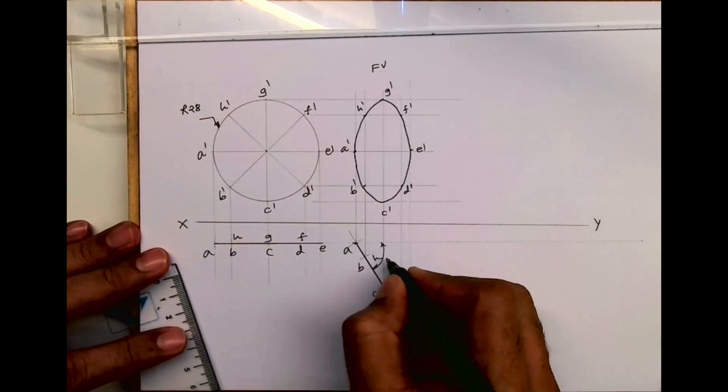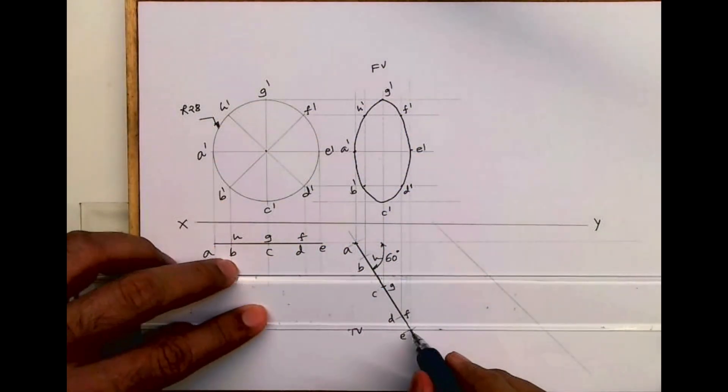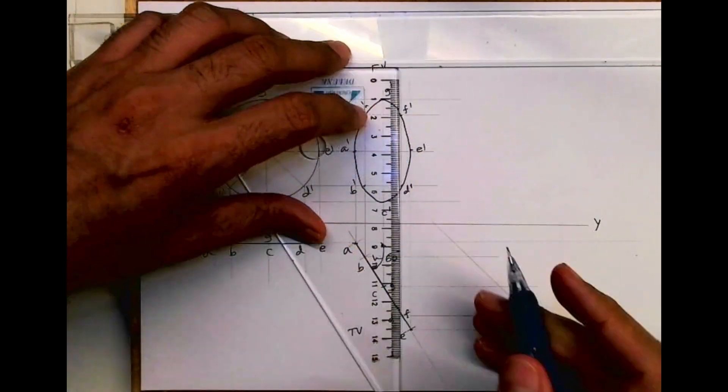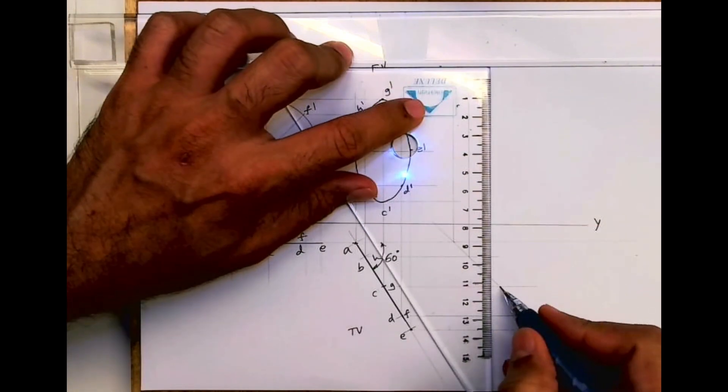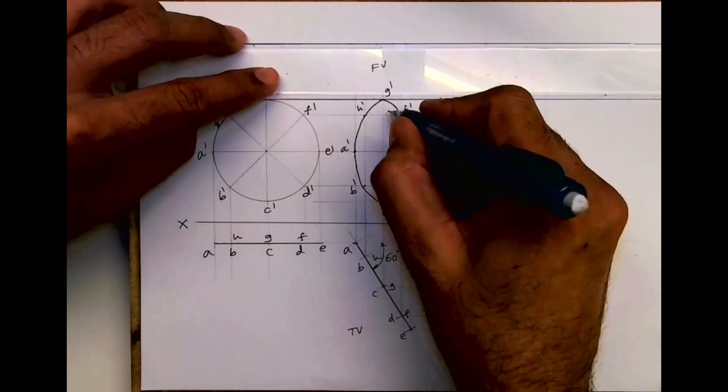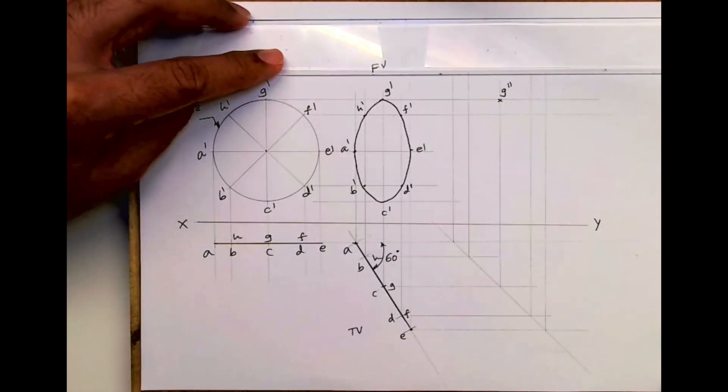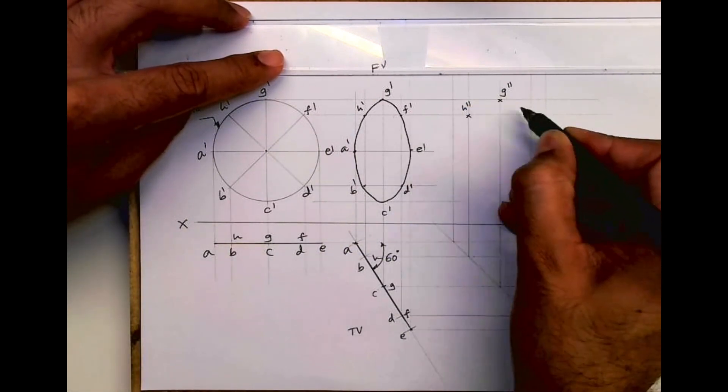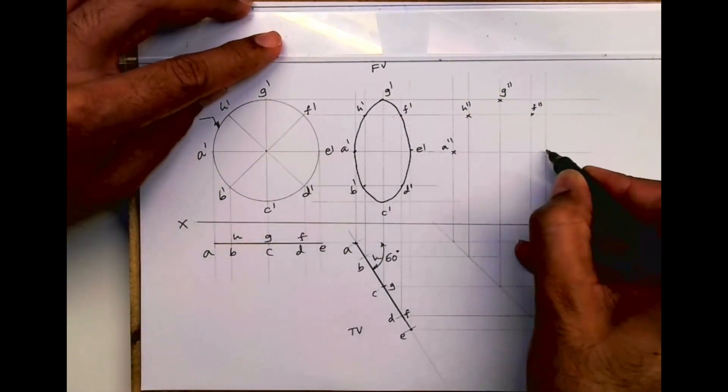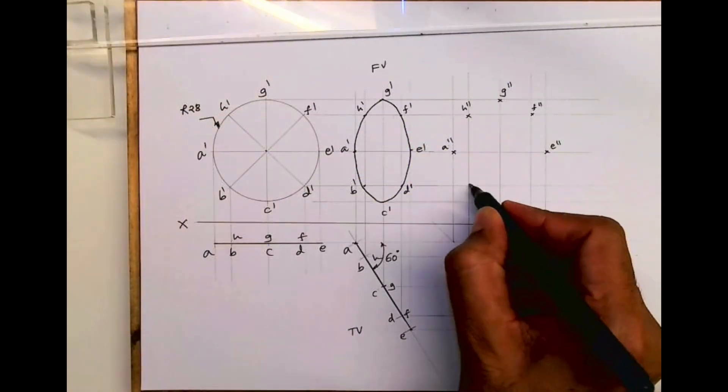We are done with front view and top view of this circular plate which is inclined at 60 degrees to VP. Now we are drawing side view. For side view, I'm extending all these lines. Wherever it is intersecting, from that point I'm going up, and from here I'm drawing horizontal. This is G double dash, H and F, H double dash, F double dash, A and E, A double dash, E double dash, B and D and C, B double dash, C double dash, D double dash.